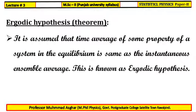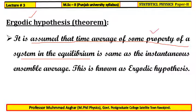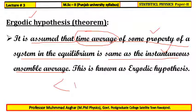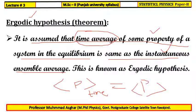Now we state the famous ergodic hypothesis or theorem. This theorem states that the time average of some property of the system in equilibrium is equal to the instantaneous ensemble average. In other words, the time average of any property of a thermodynamic system is equal to the ensemble average of that property.